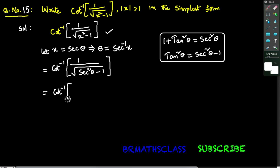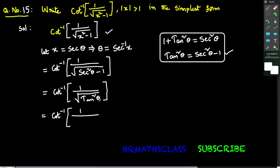That equals cot inverse of 1 divided by square root of — observe this formula. What is secant squared theta minus 1? Secant squared theta minus 1 is tan squared theta. So in place of secant squared theta minus 1, we write tan squared theta.